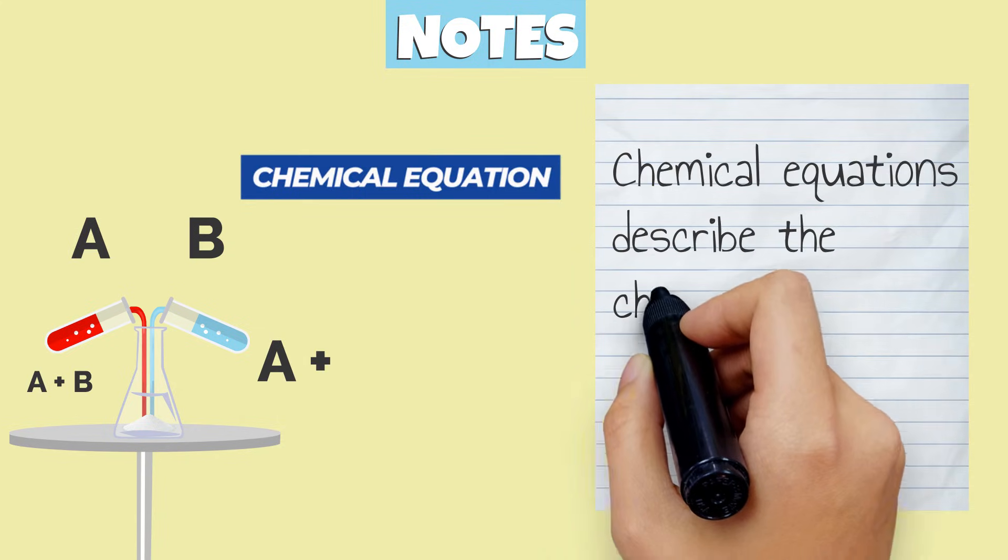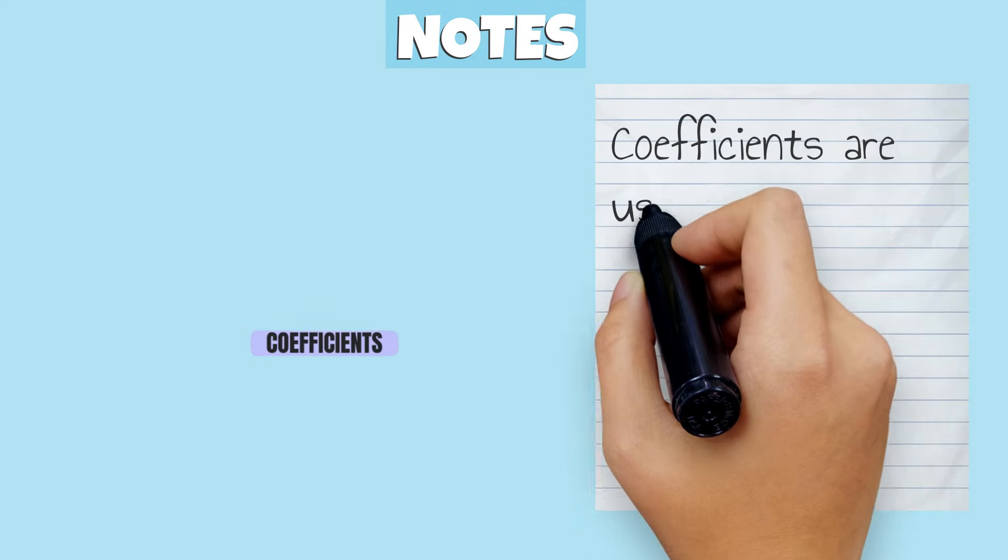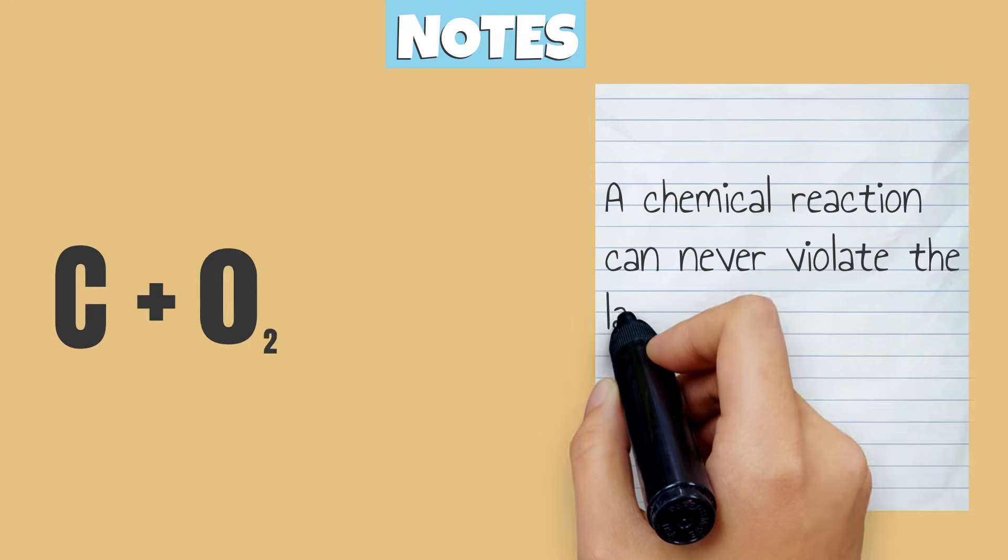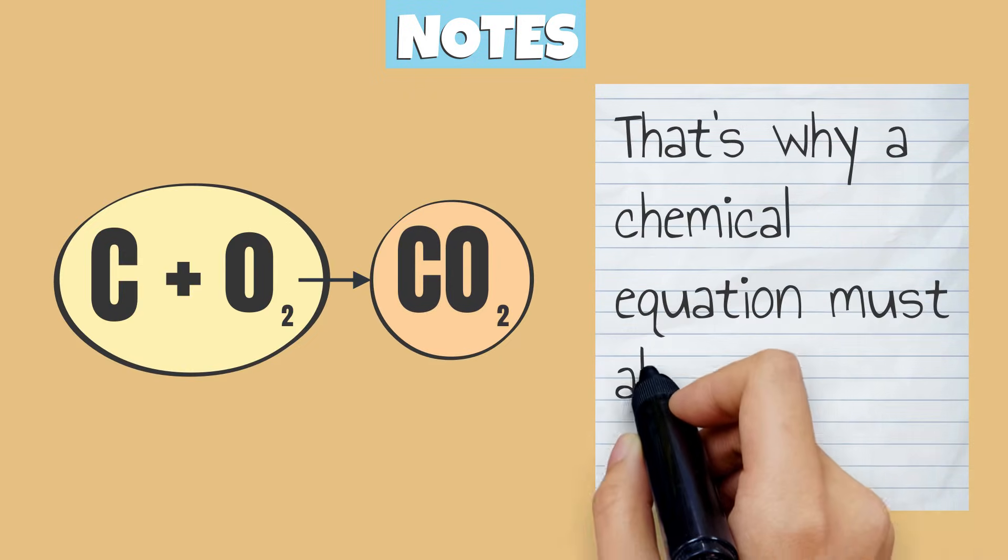Chemical equations describe the chemical reactions that occur in the natural world. Coefficients are used to balance chemical equations to satisfy the law of conservation of mass. A chemical reaction can never violate the law of conservation of mass. That's why a chemical equation must always be balanced.